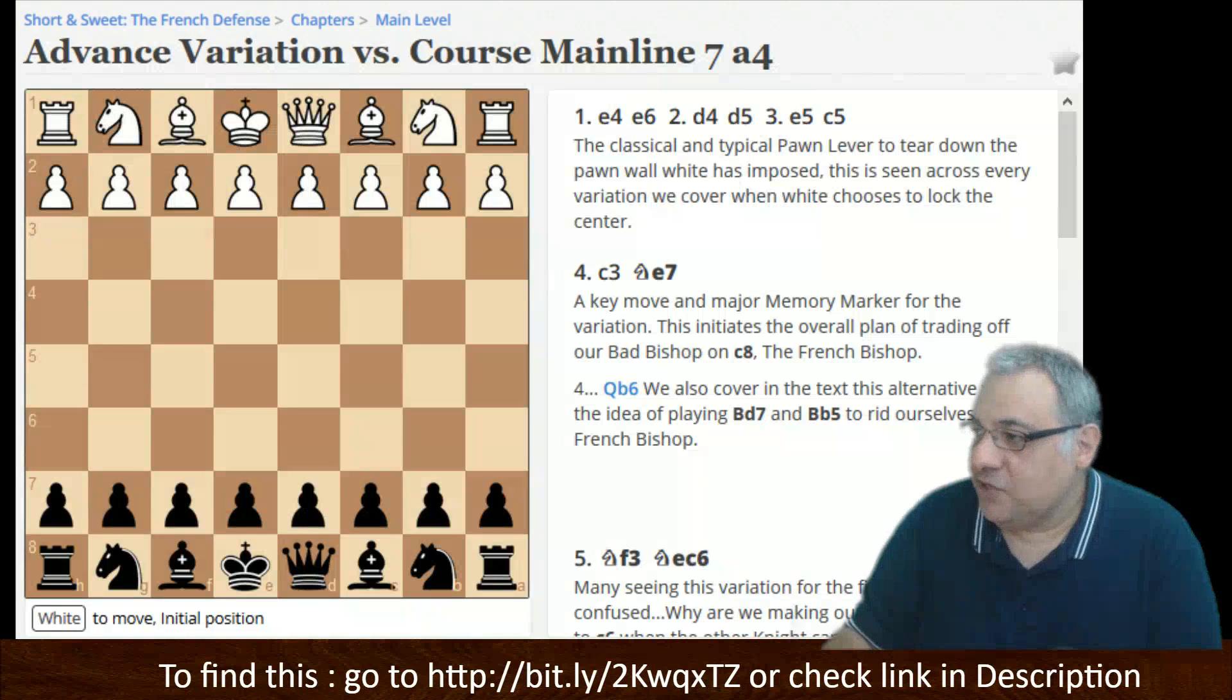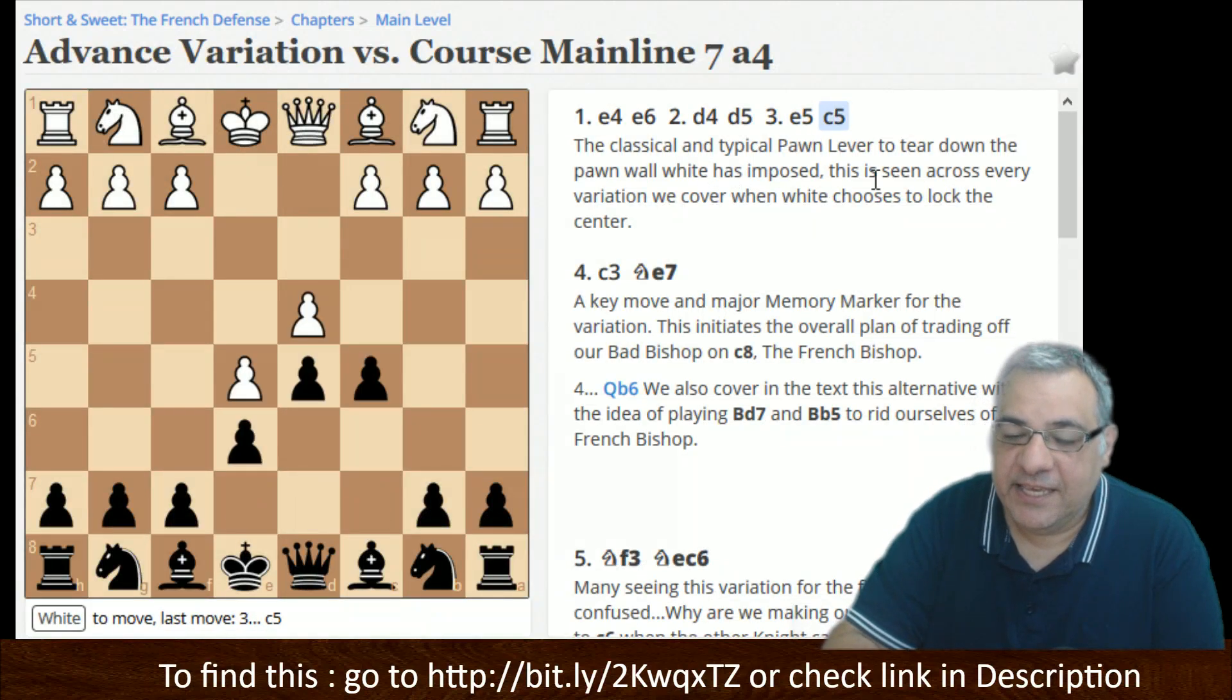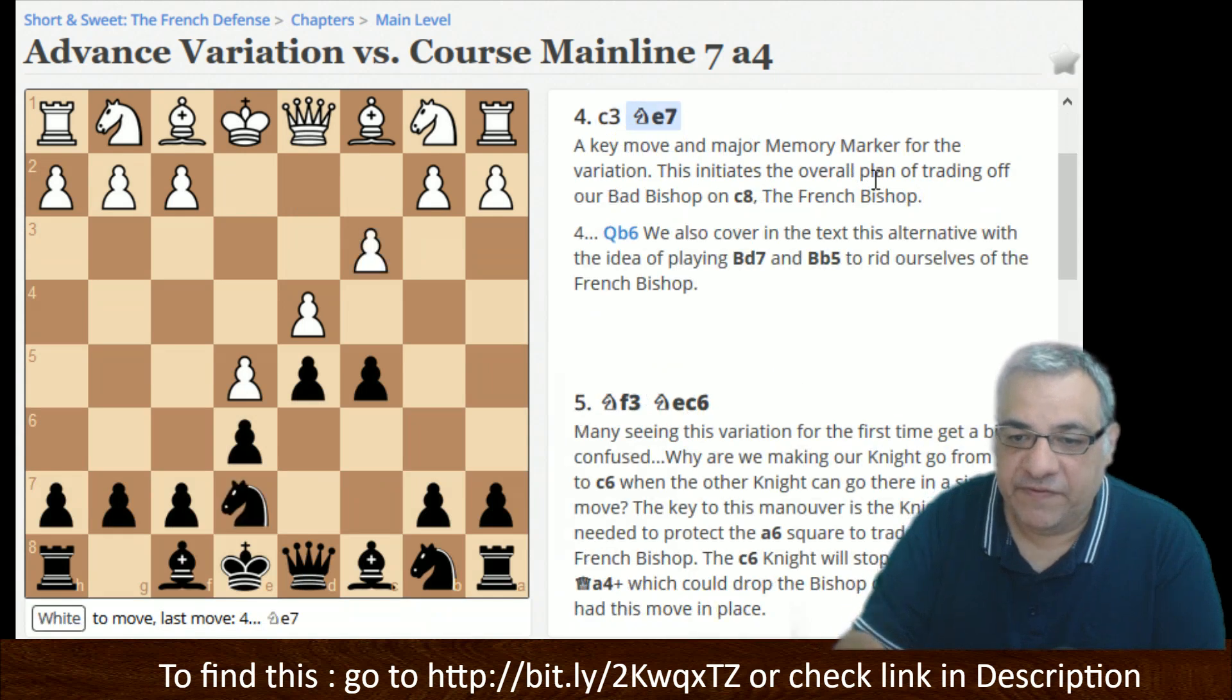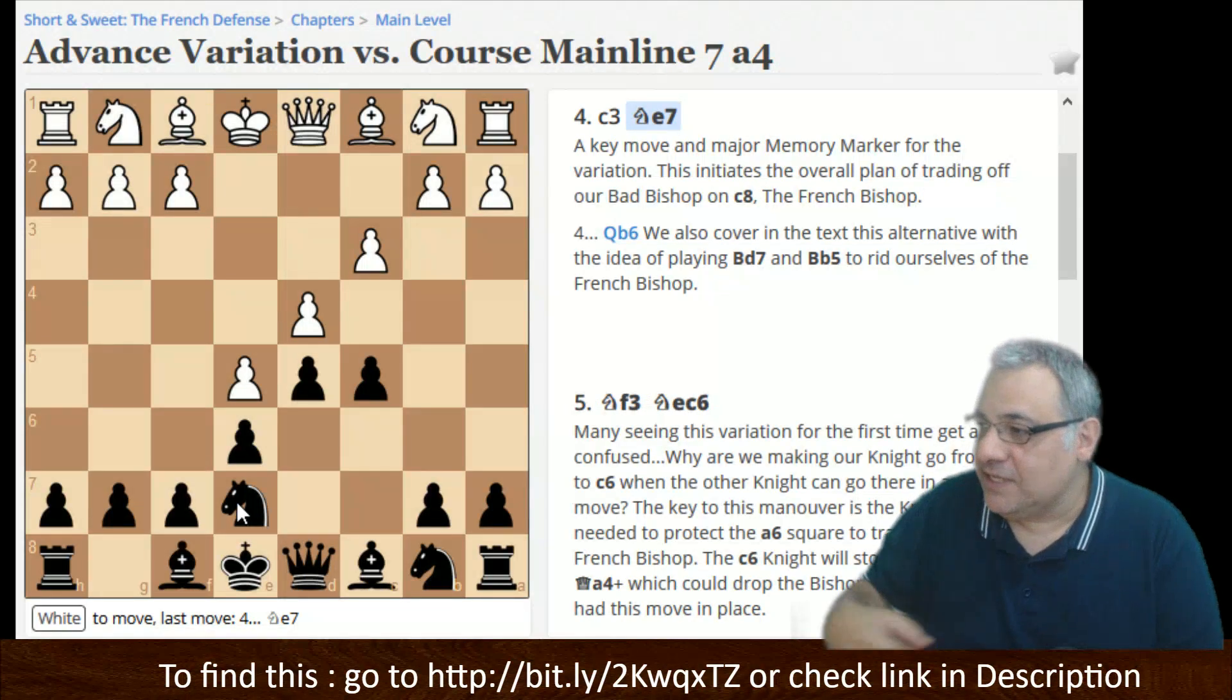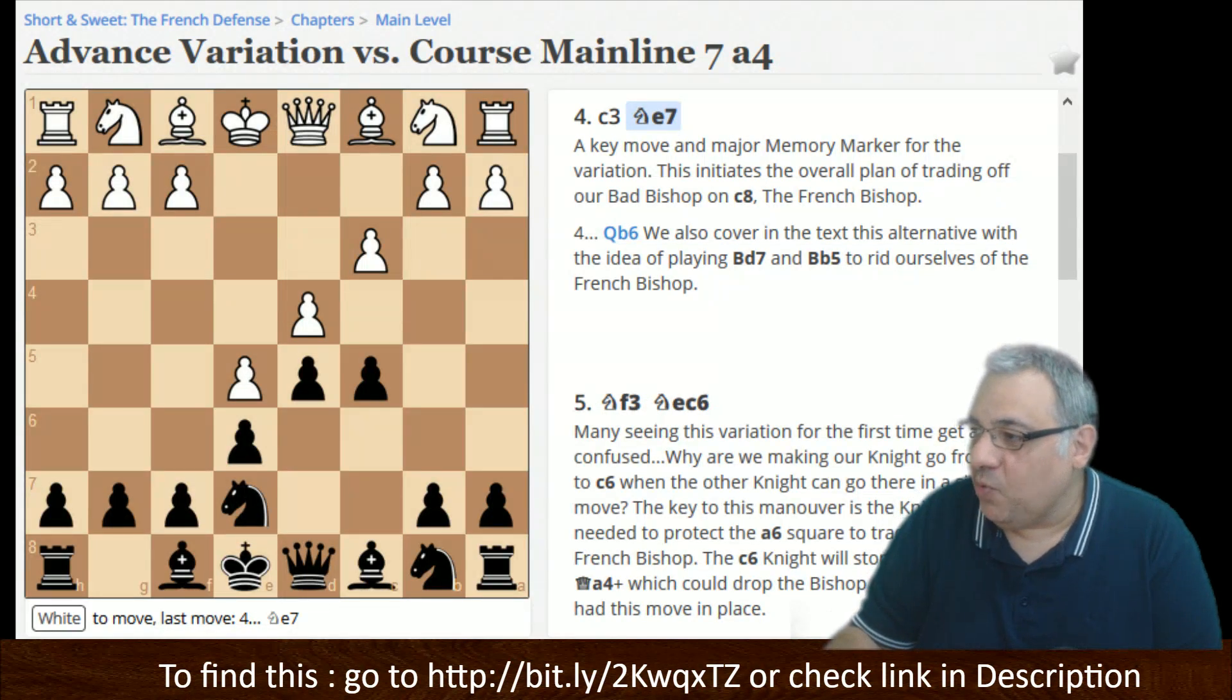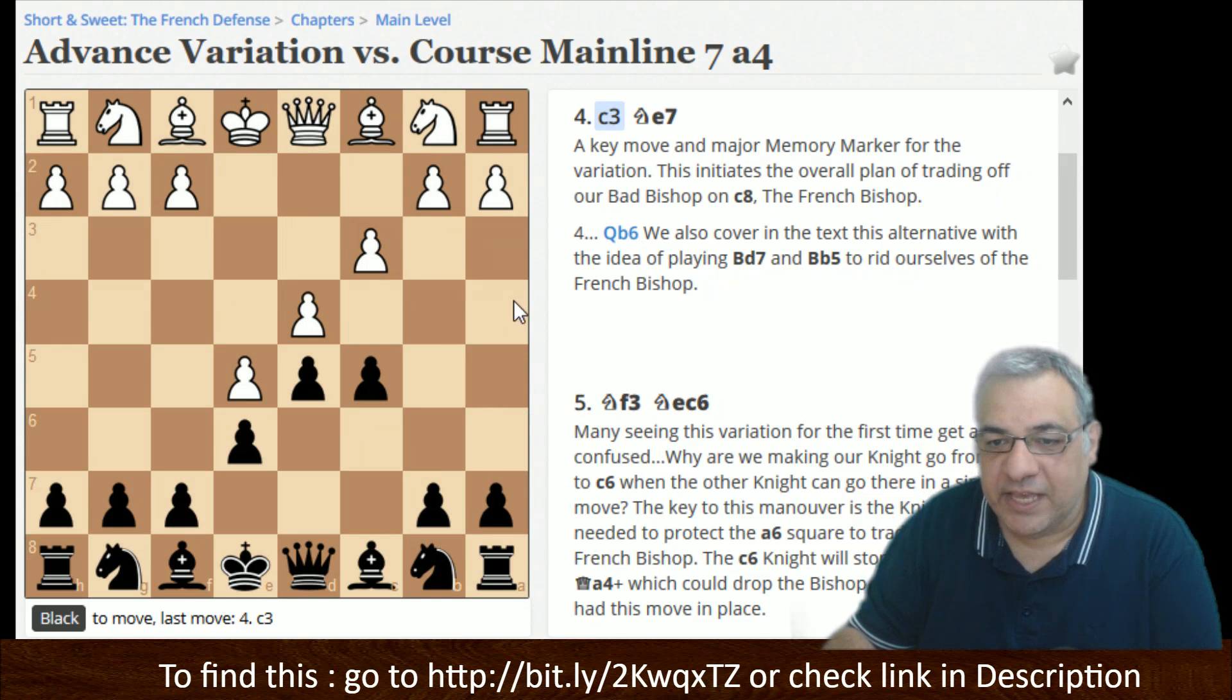So the Advance Variation. Brian makes an excellent introductory case that one of the key imbalances of the French Defense is this c8 Bishop, and this funny-looking Ne7 is not something that routinely I've been aware of explicitly. I am aware that if you don't play Ne7, if you play b6 and Bishop a6, then there's chop chop and Queen a4 check winning the knight.